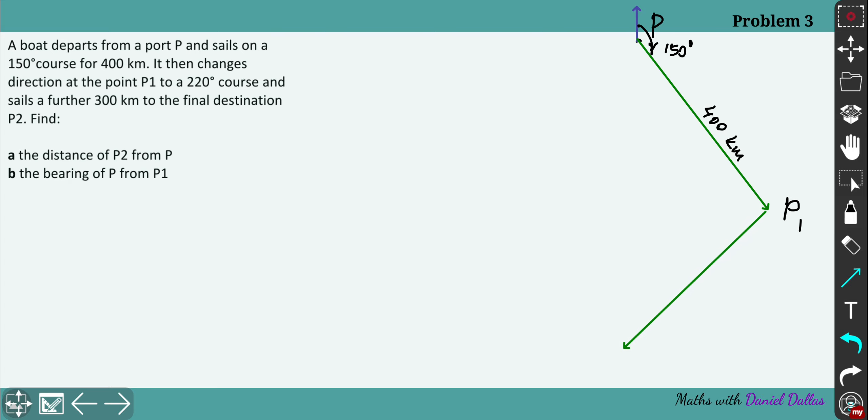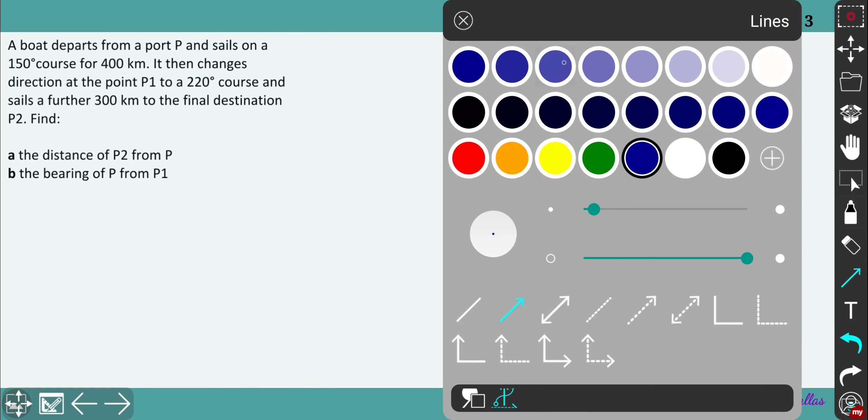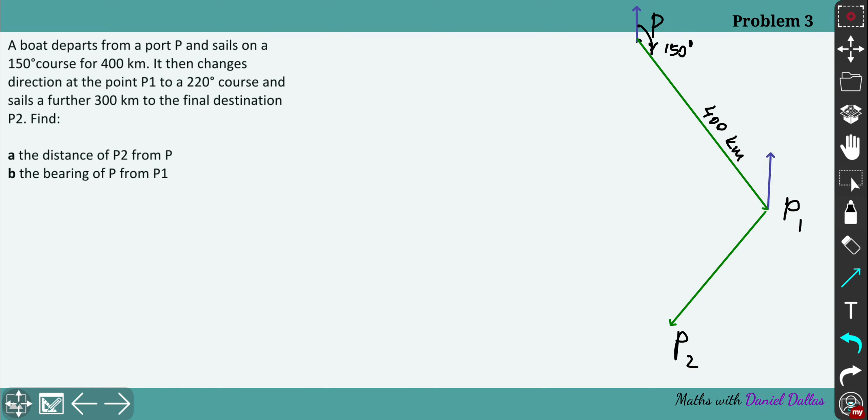So 220 degrees maybe somewhere here and sails further. Let's go over there, maybe like this, perfect. So that's P2. So the bearing from north direction from point P1 is going to be 220 degrees. So better use the red color in this case, so this is 220 degrees, that's the bearing of P2 from P1, and that's 300 kilometers.